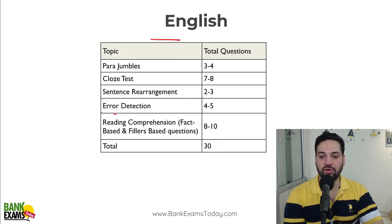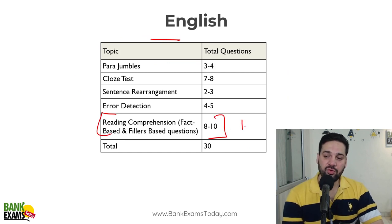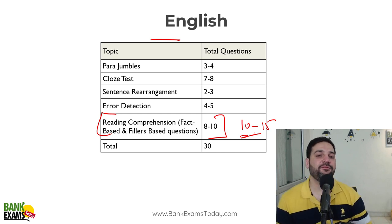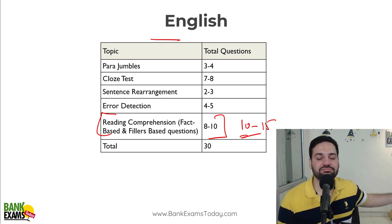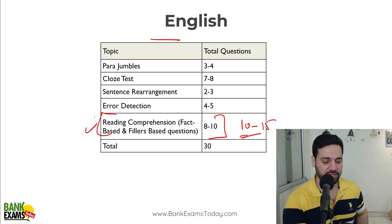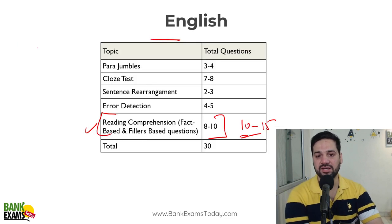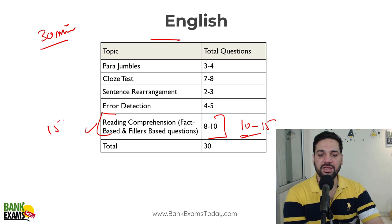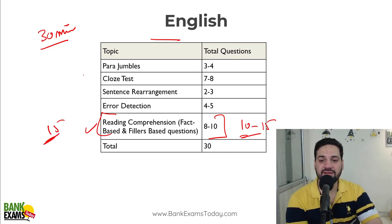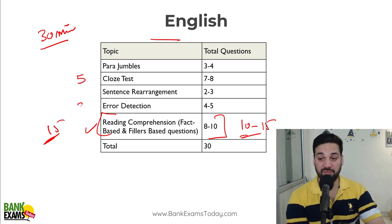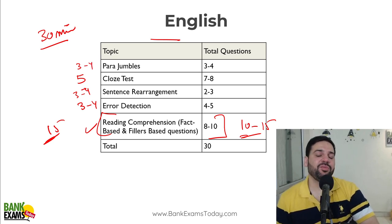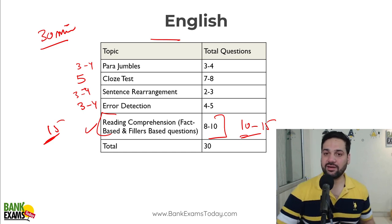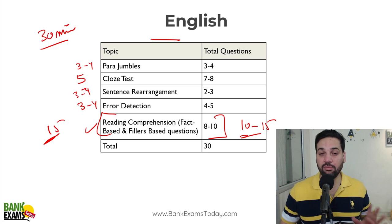For English language, if you are good at reading comprehension, 10 to 15 questions would be directly from it. If your reading speed is good and you can comprehend a long paragraph, this is an easy topic. You can easily do the RCs — the section is 30 minutes. If you spend 15 minutes on RCs, cloze test can be done within 5 minutes, error detection in 3-4 minutes, sentence rearrangement in 3-4 minutes, and para jumbles in 3-3 minutes. So within 30 minutes you can easily crack this section.